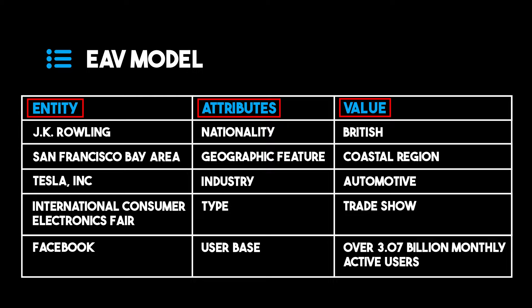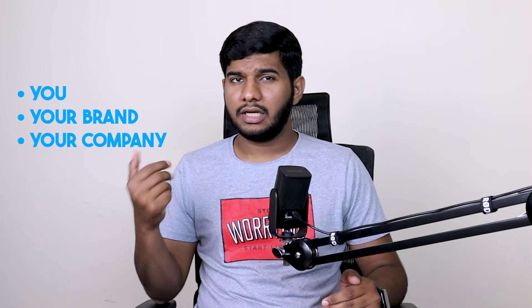When combined, it's called the EAV model that semantic search engines use. The important point here is there are other types of entities as well, such as you, your brand, your company, which, while not having Wikipedia pages, can be linked to other knowledge graphs such as Google My Business or LinkedIn. However, optimizing these entities will only improve your reputation, not your SEO. This is the biggest confusion that I have seen in the SEO community.